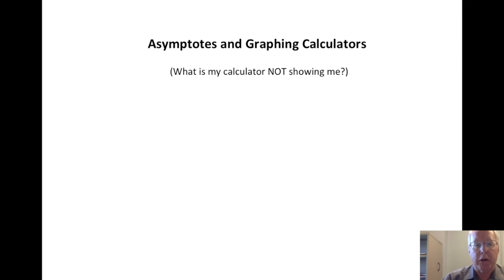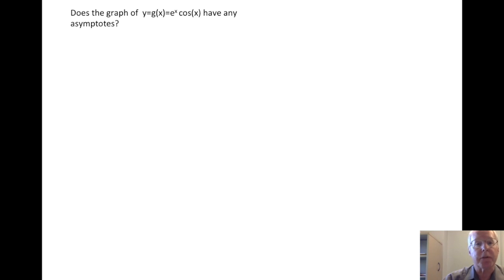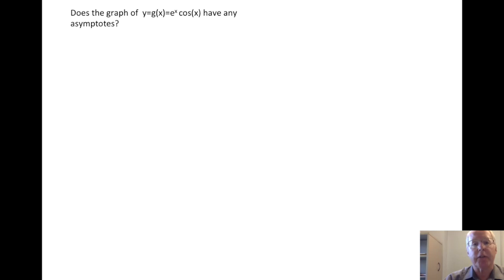In this video, we'll take a look at one more example involving asymptotes. We're going to consider the function g, defined by g of x equals e to the x cosine x, and ask: does the graph of this function have any asymptotes?